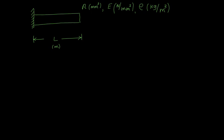If you want to work everything in mm, that's fine. Now, I am going to localize my attention on a small portion of this bar of length dx. This small portion is considered at a distance of x from the left extreme end. This bar undergoes vibration — it is a longitudinal vibration, which means that it vibrates to and fro.